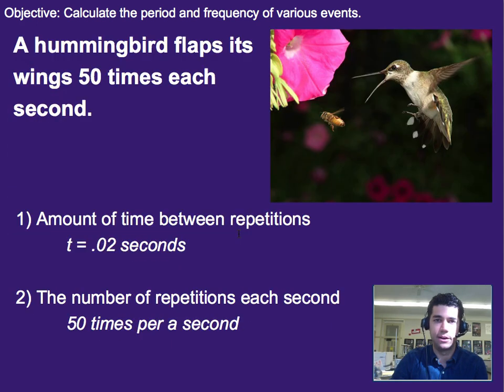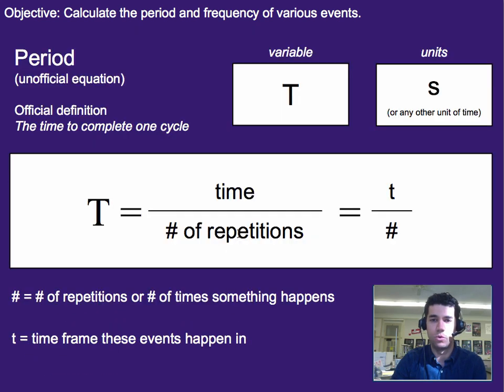So, for example, if we had our hummingbird, we have 50 times and it's each second. So we take one second and we divide it by 50 and that gives us the 0.02.